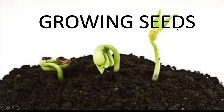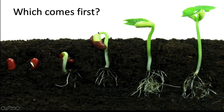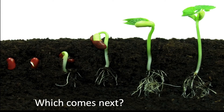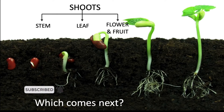Now shall we see about growing seeds? Yes. If you put a seed, it will sprout — the roots come first, and then comes the seedling, that's the shoots. So which comes first? Roots. Which comes next? The shoots. What do you mean by shoots? It is the stem, leaf, flower, and fruit. Good job.